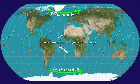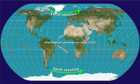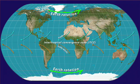In the ITCZ, prevailing conditions are low barometric pressure, high humidity, and high rainfall. Monsoonal rains are found along the ITCZ. This is why the equatorial latitudes are typically green and wet.